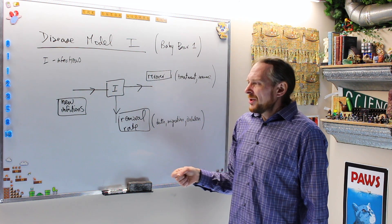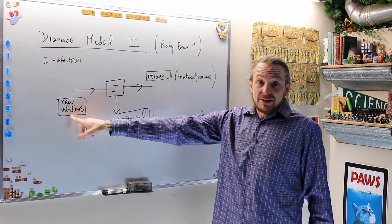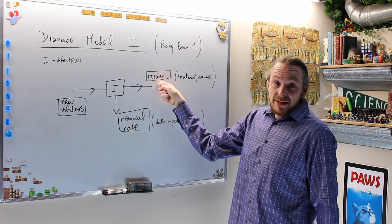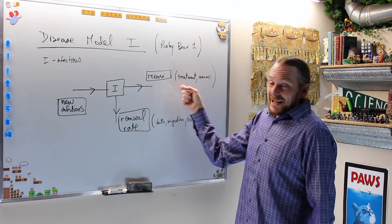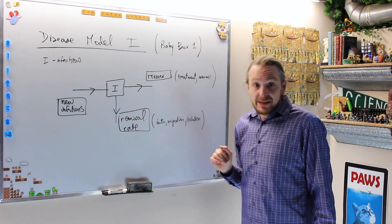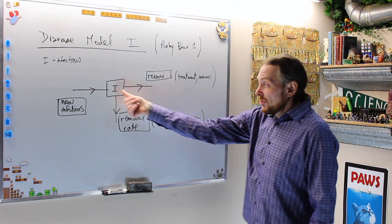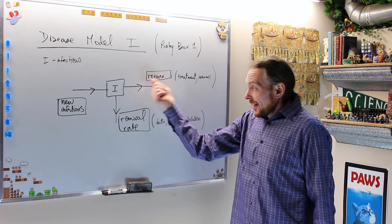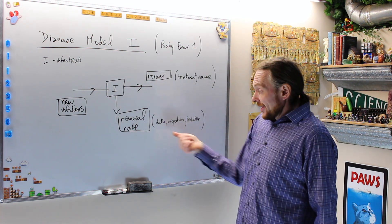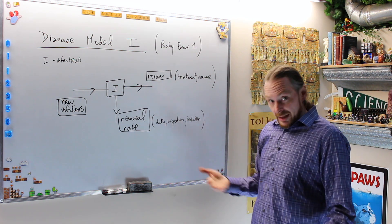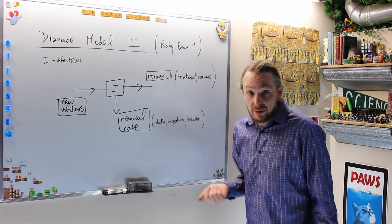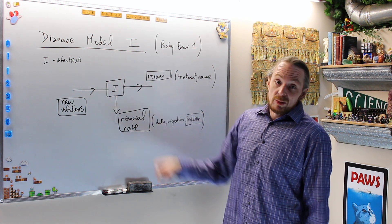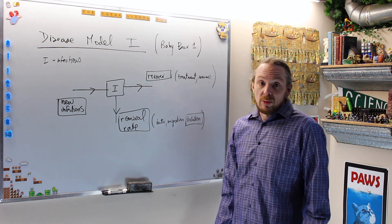In the compartment model, we draw arrows leading in or leading out. There could be a way to create more infected people — that's going to be new infections. We also have a recovery rate or removal rate, which could be from treatment and getting cured. Then you get out — you're not infected anymore. Or you could be immune. Another way to be removed is from death, migration, or isolation. Isolation is exactly what we're trying to do right now for the coronavirus — to mitigate and remove as many people as we can from the infected population.